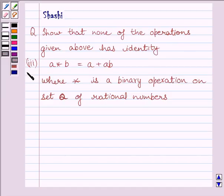The third part given in the previous question is: A star B equals A plus AB, where star is a binary operation on set Q of rational numbers.